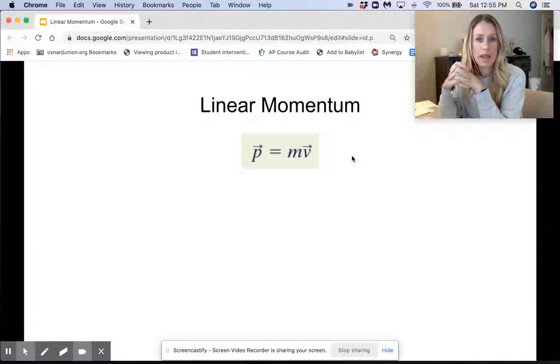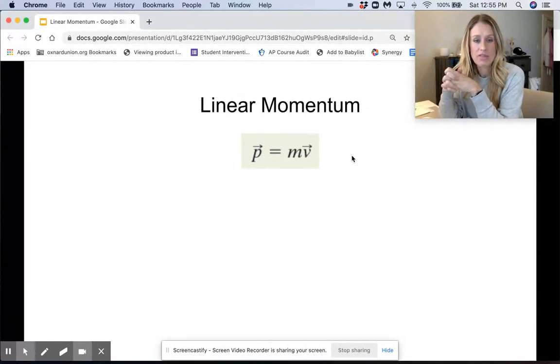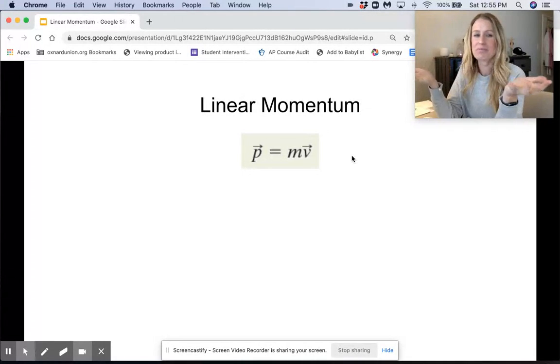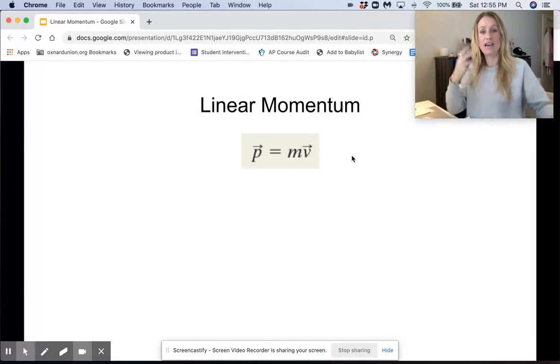Now you can see the little arrows above both momentum and velocity. That just tells us that those are both vectors. I also don't know exactly why they use P for momentum. I guess M was already taken for mass, so they just needed something else to use.